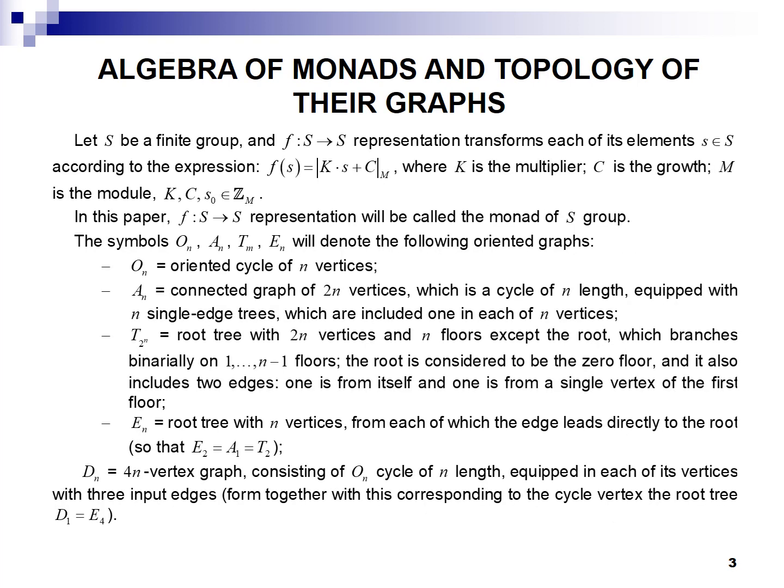We use the algebra of monads and topology of their graphs by Vladimir Arnold. According to his work, a monad is a representation of a finite set in itself. The monad graph has all elements of this finite set as vertices, and oriented edges connect each element with its image. Connected components of any monad are cycle attractors which are equipped with root trees attached by their roots to each vertex of the cycle attractors.